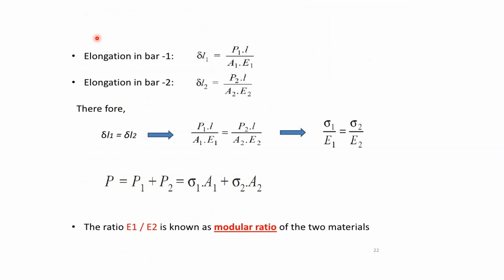Elongation in bar 1 is given by the formula delta L equals PL divided by AE. For bar 1: delta L1 equals P1 times L divided by (A1 times E1), since both bars have the same length L. Similarly, elongation in bar 2: delta L2 equals P2 times L divided by (A2 times E2). When a composite bar is subjected to a constant force, the deformation in both bars remains the same because the composite bar expands or contracts as a whole.